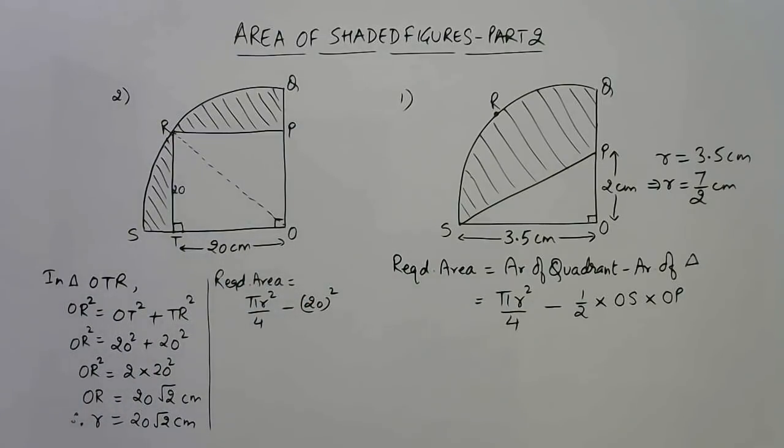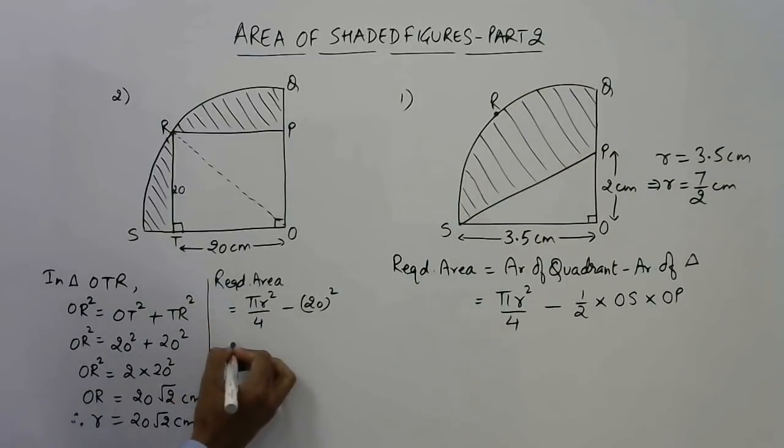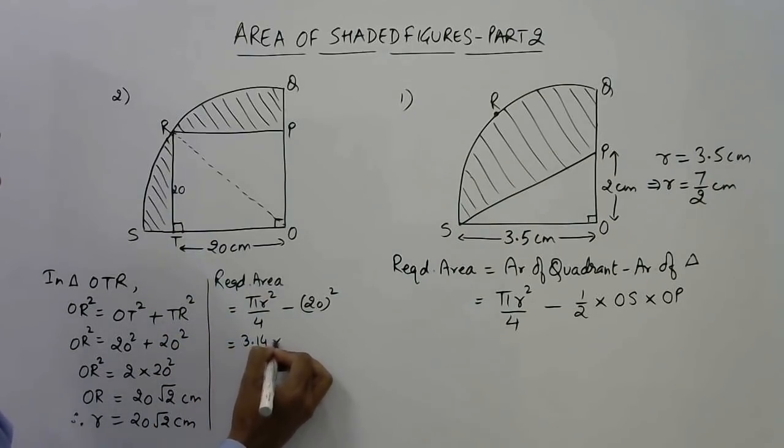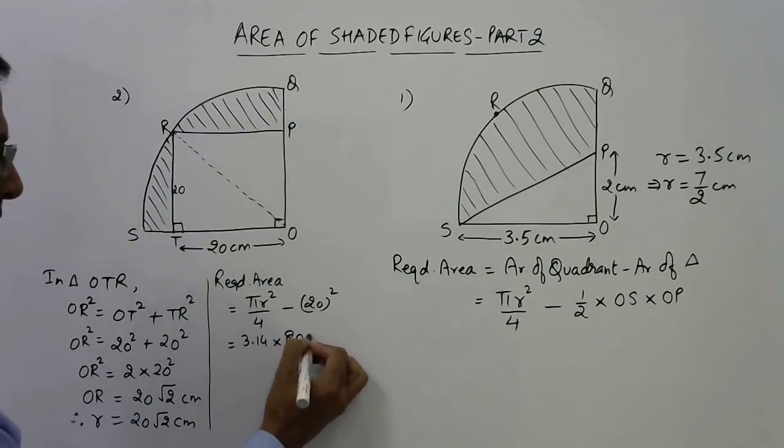Here we have reached a stage where we have to just substitute the values and find the required answer. So required area here - this is 20√2, so we can square that up. Pi is 3.14 and multiplied by r². If you square this up, this will become 400. 200 into 2 is 800, and upon 4 minus this is 400.